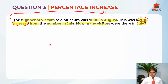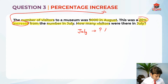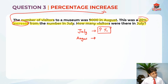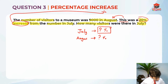Now let's move on to solving the question. In order to solve this question, we need to know what is July — how many percent is July and August? So July is a mystery-mark percentage; we do not know it. August — they have told us this was a 20% increase. So August is mystery-mark percentage plus 20%.